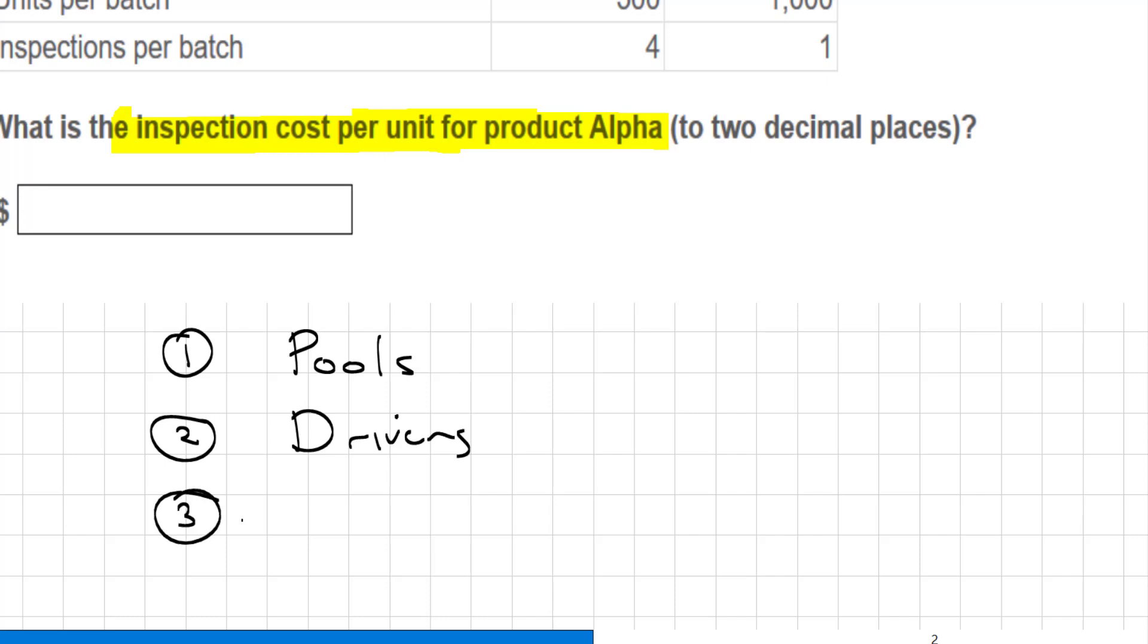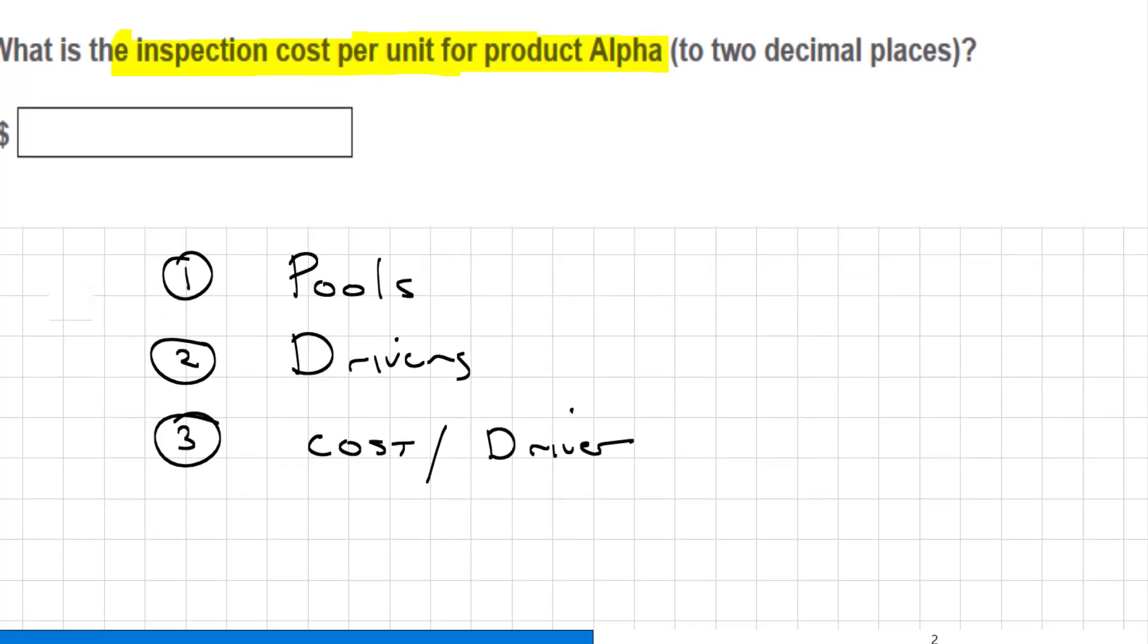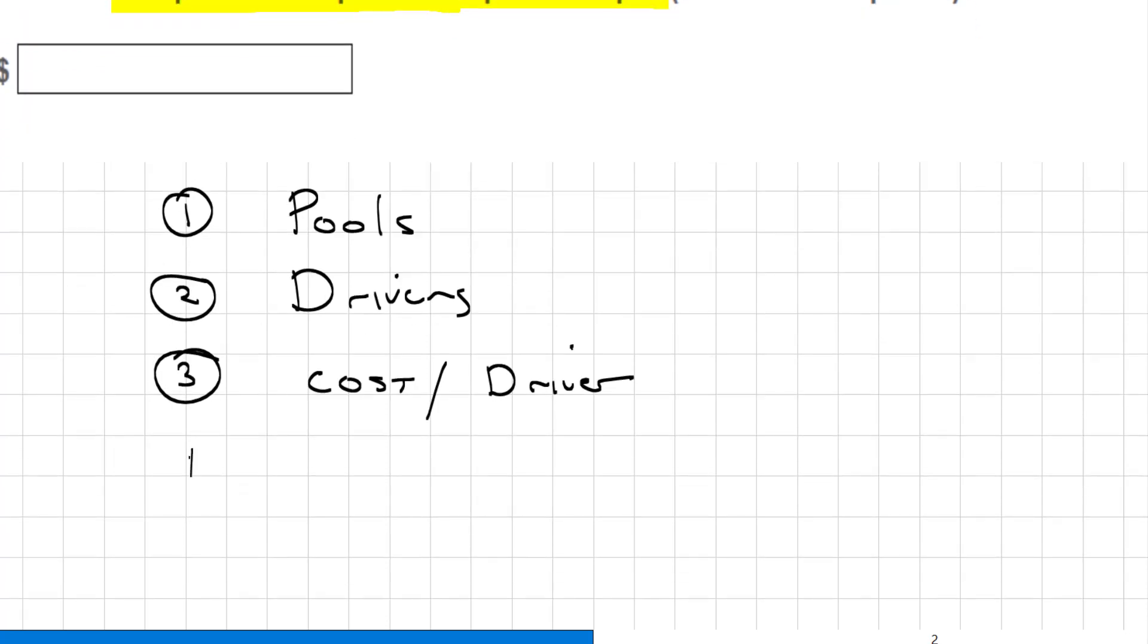The third thing that I need to do is cost per driver so that I can then get the ABC cost per unit. So let me get organized before I read the question. Otherwise I'll get lost in the fog.